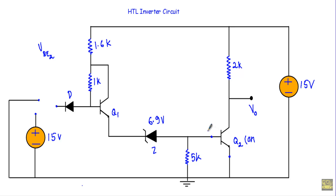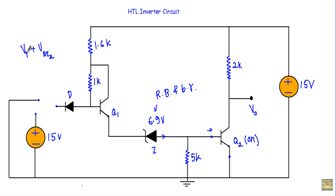When this transistor is in the on state, I will get base current at the base terminal. To get the base current at the base terminal of transistor Q2, this Zener diode must be in reverse bias and operated in the breakdown region, so that I get the reverse current in this direction. To turn on transistor Q2, I have to turn on the Zener diode also. Therefore, the voltage difference between these terminals will be equal to VZ plus VBE2.